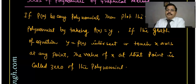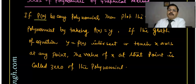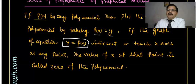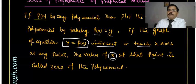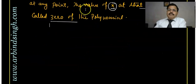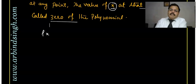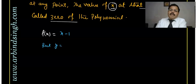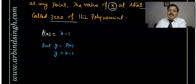It means: p(x) be any polynomial in x, then plot the graph by taking p(x) equal to y. If the graph of y = p(x) intersects or touches the x-axis at any point, then the value of x at that point is called a zero of the polynomial. Suppose I have x minus 1. I want to plot the graph of this polynomial, so we write y = p(x), that is y = x minus 1.